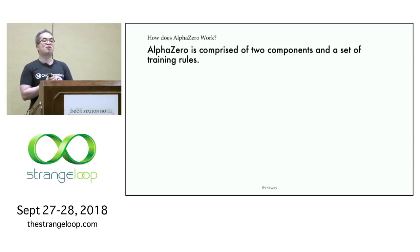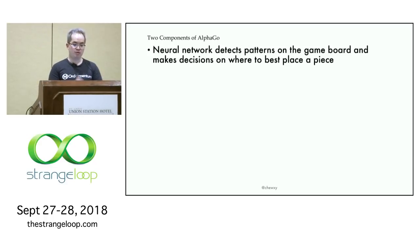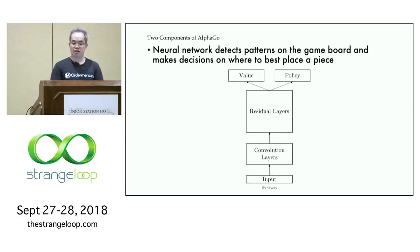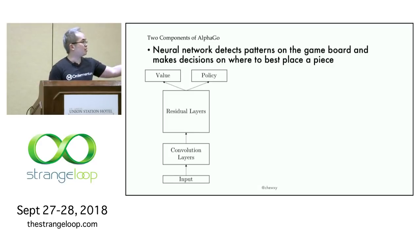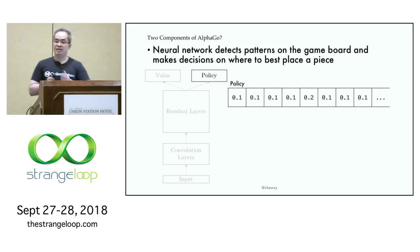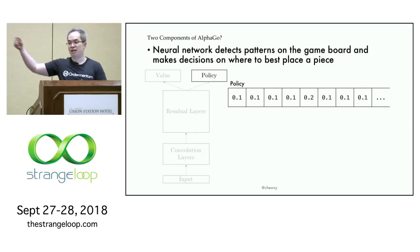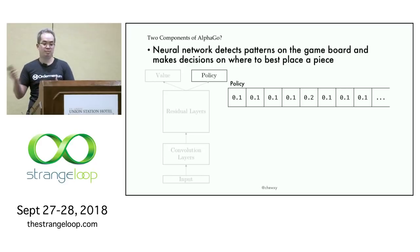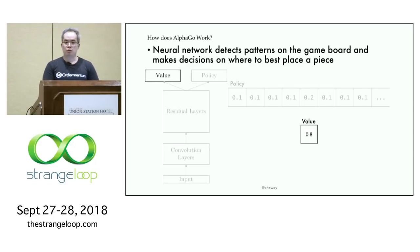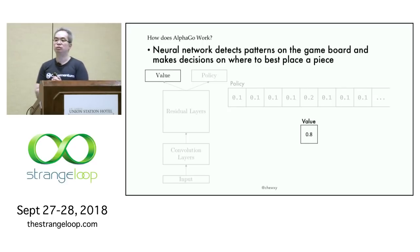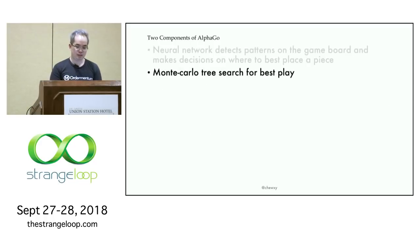AlphaGo in its core is surprisingly simple — there are only two components. First, there is a neural network that detects patterns on a board and makes decisions on where to place the next stone. The neural network returns a policy and a value. A policy is essentially a decision on what actions to take next — it's a list of probabilities, where each cell represents a placement for a stone. The value is what economists would call an expected value — how much the policy is worth.